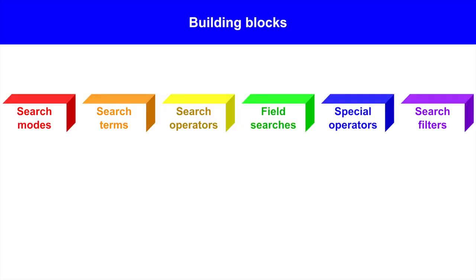A search strategy comprises six building blocks: search modes, terms, operators, field searches, special operators, and search filters. Let's review each one.